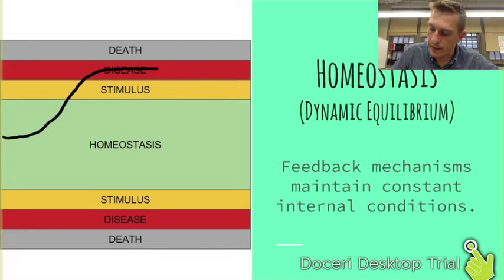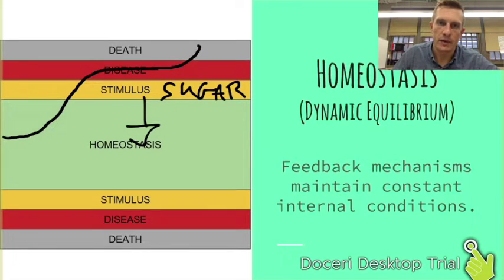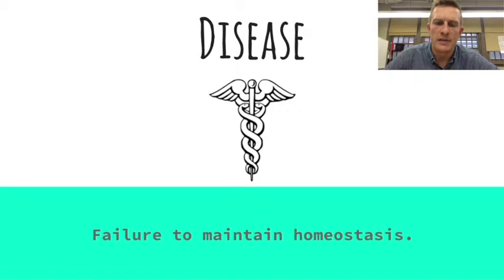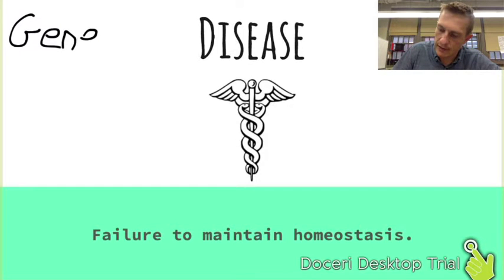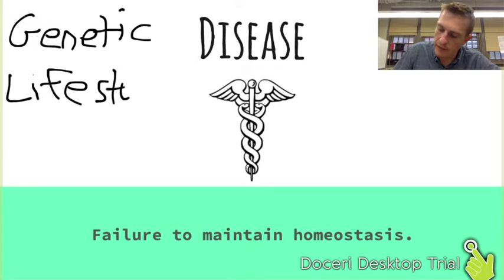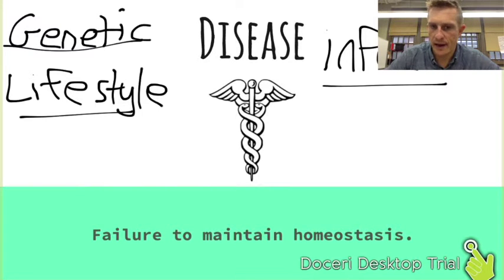For example, someone with diabetes — if their blood sugar gets too high, they can't bring themselves back into homeostasis, and if they stay out of homeostasis for too long, death can result. Disease is defined as the failure to maintain homeostasis, and diseases have many causes: genetic diseases that get inherited, diseases caused by lifestyle and behaviors, and diseases caused by pathogens that are infectious.